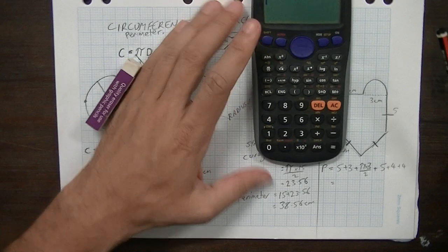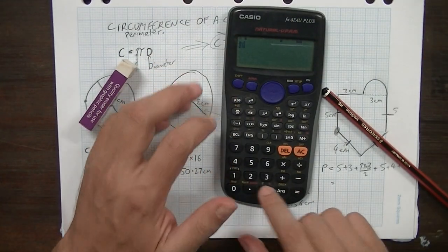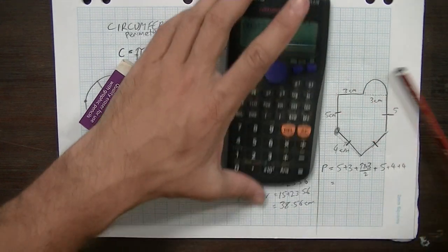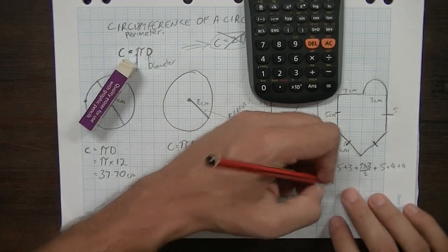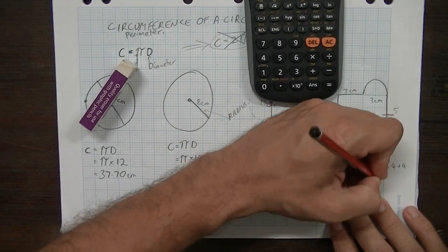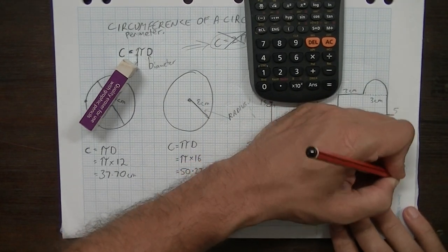Now, I'll just find out what that curvy bit is. 4.71. So 5 plus 3 plus 4.71 plus 5 plus 4 plus 4.